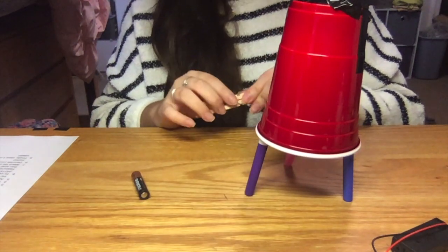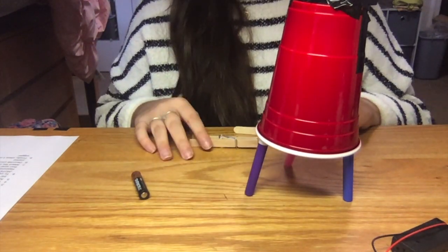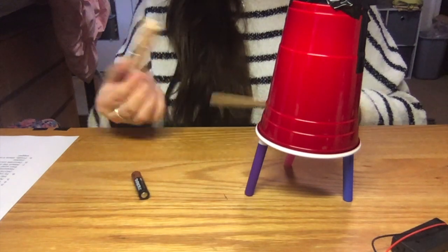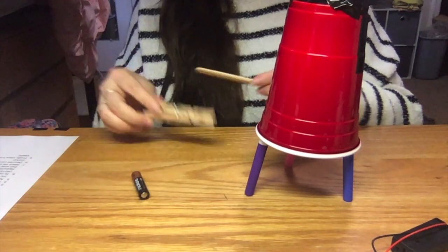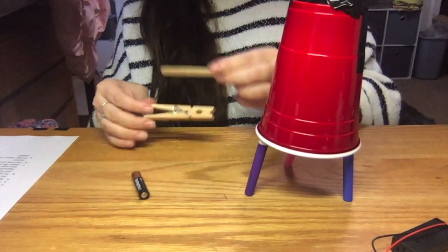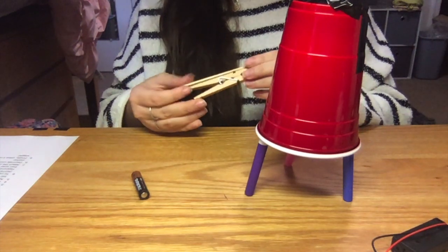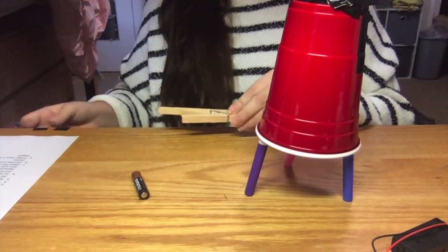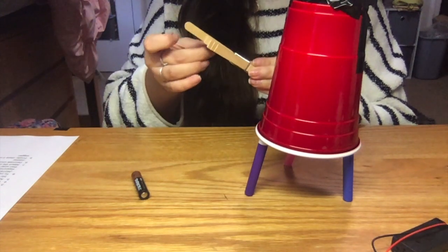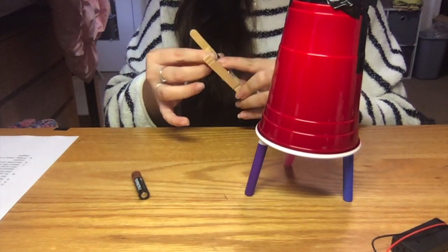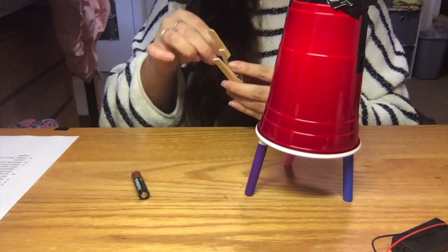Okay, so this next step is kind of optional, but basically if you want your bot to wiggle more, then you can remove the clothespin and you're going to tape a popsicle stick to the side of it. So I'm going to do that right now, and again you can just do this using electrical tape.